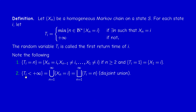What does it mean that T_i is infinity? It means that the set is not empty — there exists at least one n such that X_n equals i. This event can be written as the union of the events {X_n = i}, or equivalently as the disjoint union of the events {T_i = n} for some integer n.